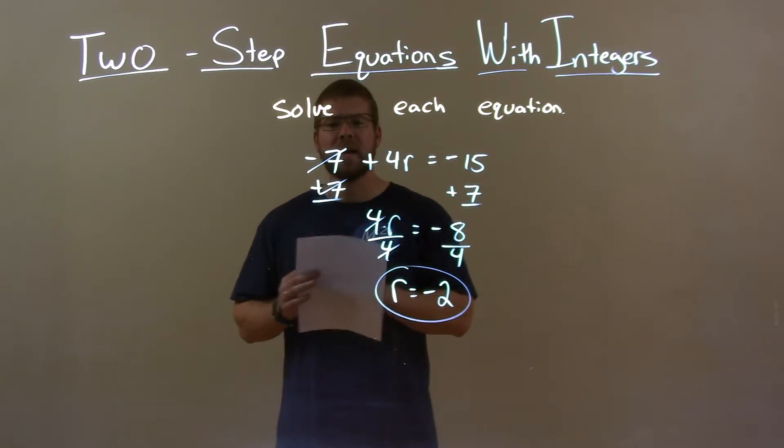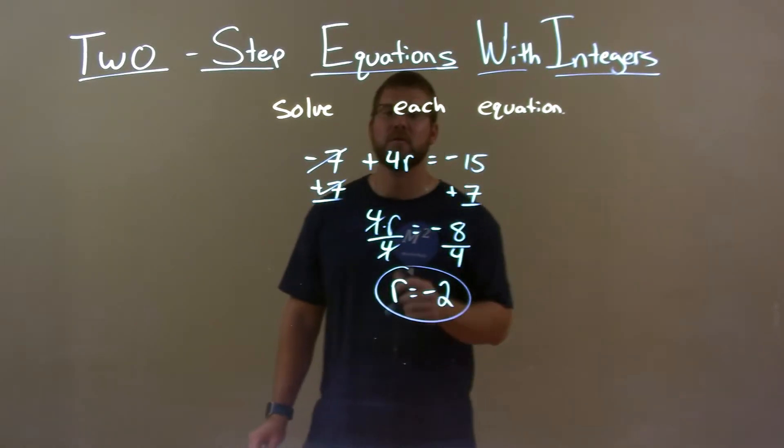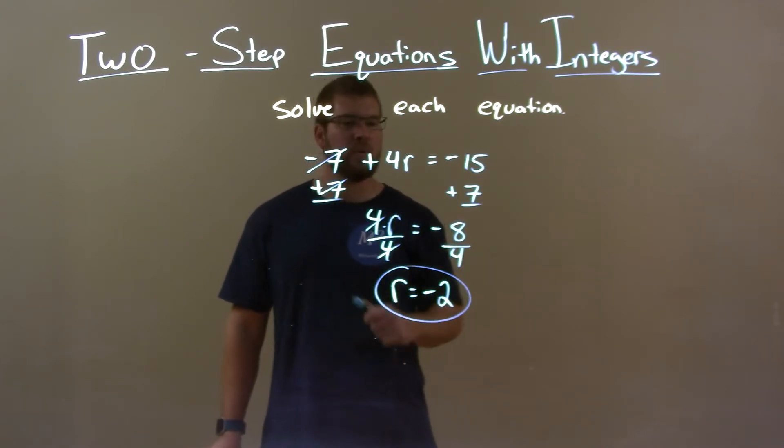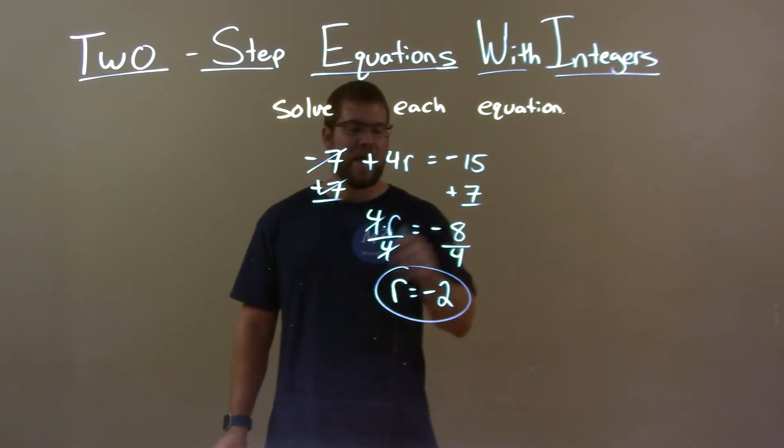Quick recap, we're given negative 7 plus 4r equals negative 15, and we want to solve for r. Add 7 to both sides, and divide by 4. That gave me my final answer, r equals negative 2.